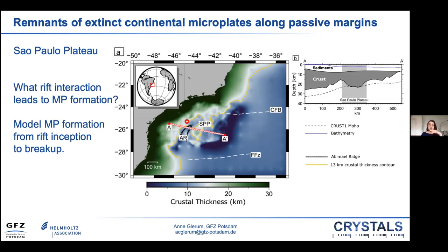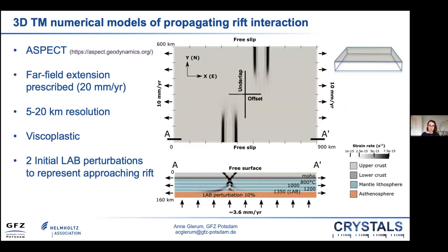To model the entire microplate evolution, we used numerical models over 25 million years of model time. We used the ASPECT code to set up a 3D thermomechanical box model and extended east-west at 20 millimeters per year. The compositional structure consists of four elastoplastic layers: 25 kilometers of upper crust, 10 kilometers of lower crust, the lithospheric mantle, and asthenosphere underneath. Most importantly we include two notches — one to the south and one to the north of the boundary — where we slightly raised the LAB, causing initial deformation to focus there. We vary the underlap and offset of these notches as well as the ratio of upper to lower crust and the LAB depth.